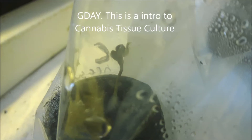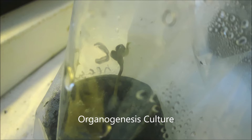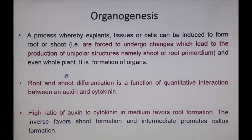G'day, this is a basic introduction to cannabis tissue culture where I brought back the mum from her seed and still produced her daughter by organogenesis. Organogenesis is when you use tissue or cells to produce roots or shoots under different types of medium, and it's basically controlled by your hormones.